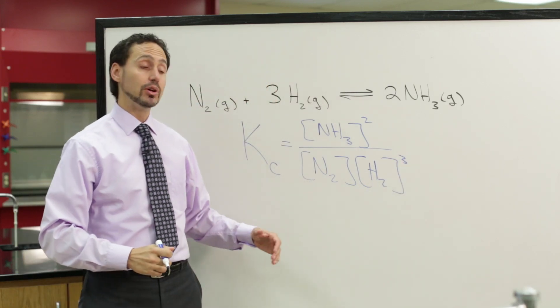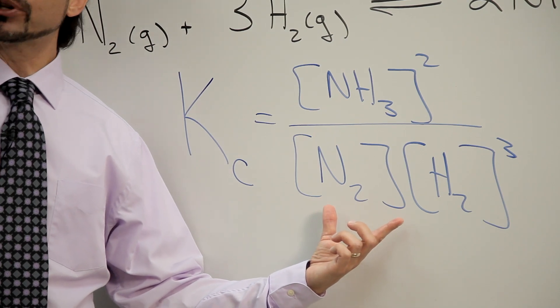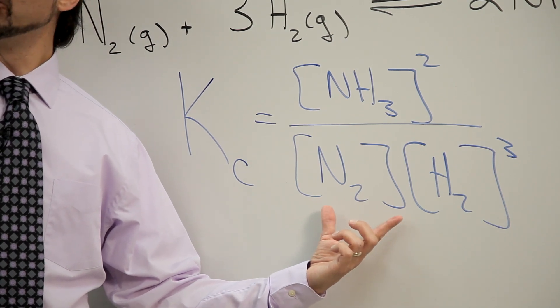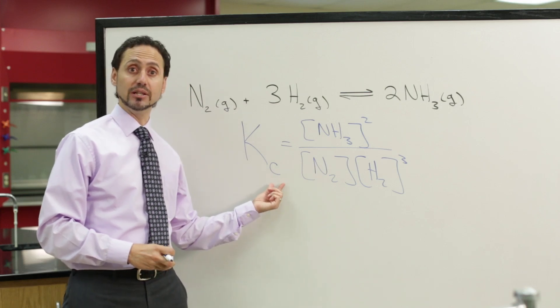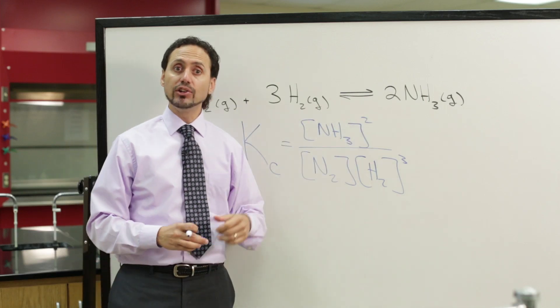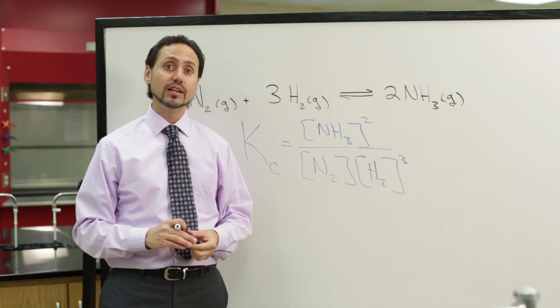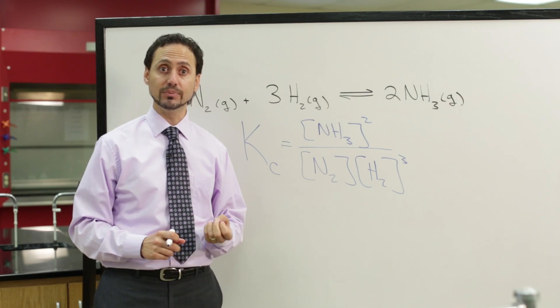And if you remember from your earlier chemistry, these square brackets denote that we're talking about the concentration in molarity units. So, that's K with a subscript C. But since we're using gases, another way chemists measure gases is to measure the partial pressures of each of the components that's in the system.